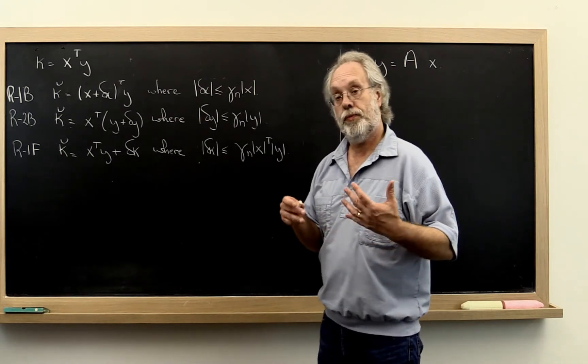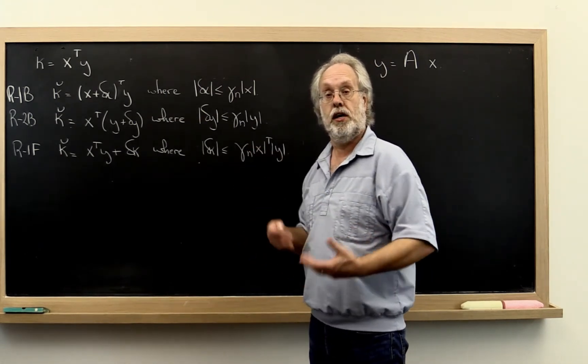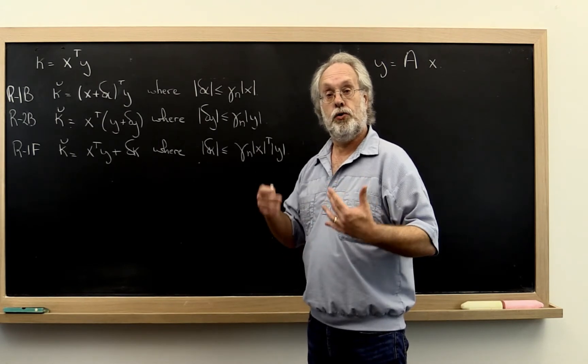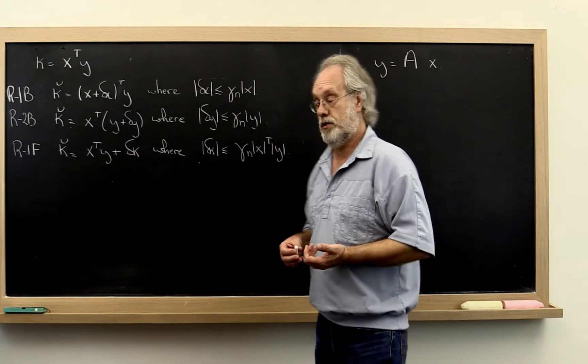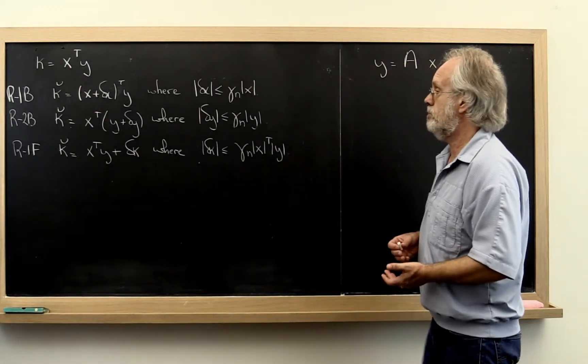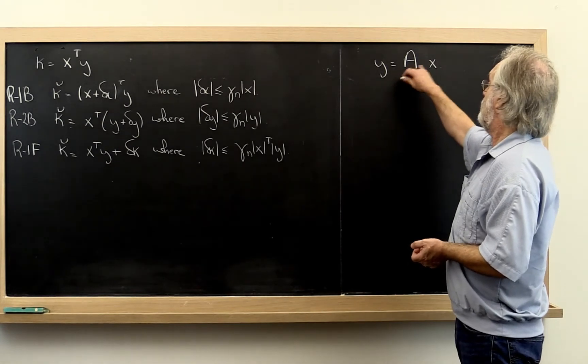So what we want to show you now is how you can take such results and use them to come up with backward error results for more complex operations. So what's the next more complex operation that we might run into? A matrix-vector multiply.